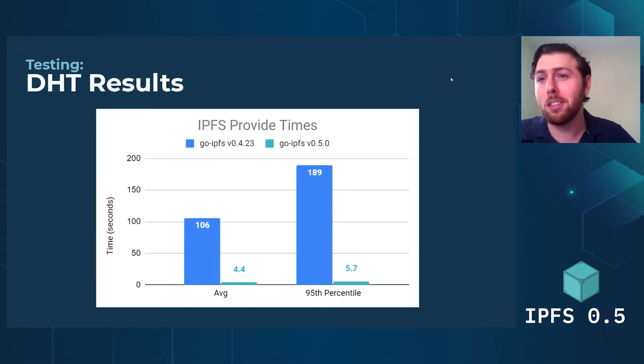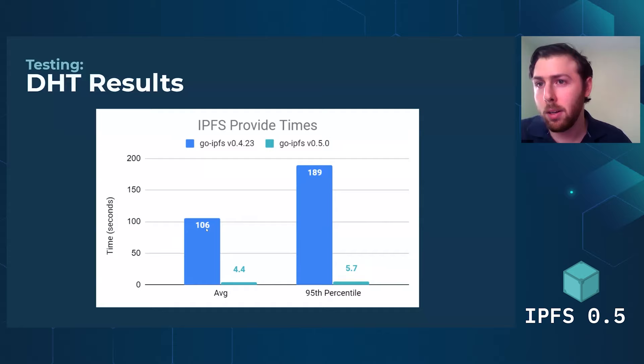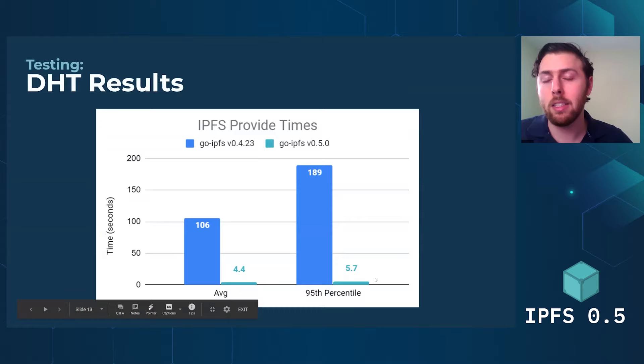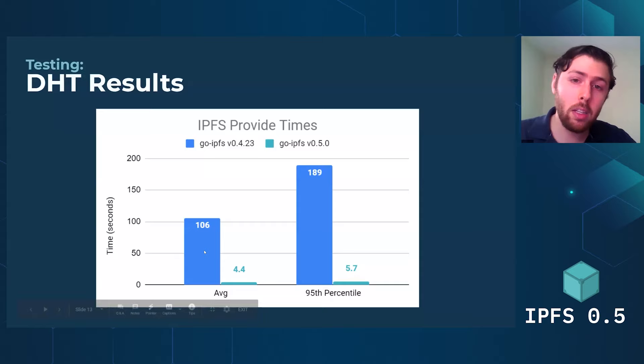This is how long it takes to provide — as in, tell someone that you have a piece of data. You can see that the differences are enormous. One side is what it would look like if the entire network was on 0.4, and the right side is how long it would take if the entire network was on 0.5. The 95th percentiles are very large on the old version, because when the routing structure is a little bit off, you can sort of get lost in the network. And now you won't.